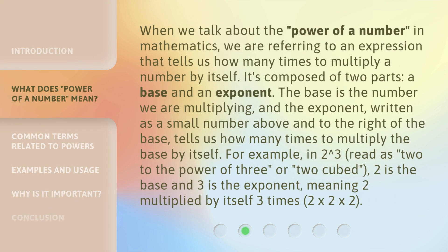When we talk about the 'power of a number' in mathematics, we are referring to an expression that tells us how many times to multiply a number by itself. It's composed of two parts: a base and an exponent. The base is the number we are multiplying, and the exponent, written as a small number above and to the right of the base, tells us how many times to multiply the base by itself.